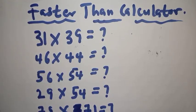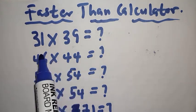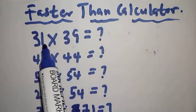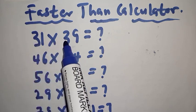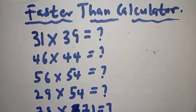Hi everyone, welcome to my class. In this class we want to look at how we can calculate faster than a calculator — no need to press buttons. Specifically, we want to look at how to multiply two-digit numbers having the same tens digit where the units digits sum to 10. For example: 31×39, 44×46, 55×55, 77×77, 11×11, 66 — all share the same tens digit.